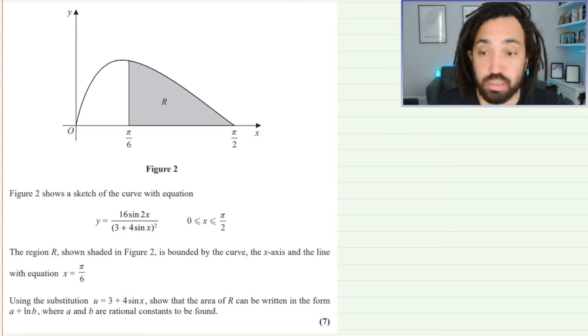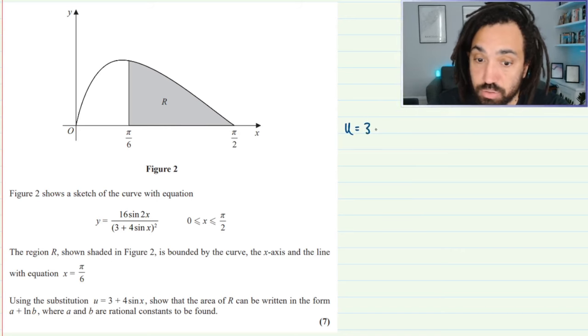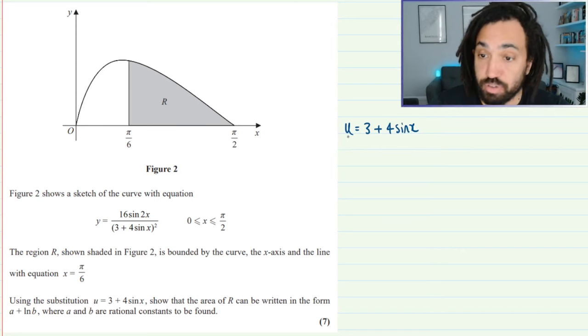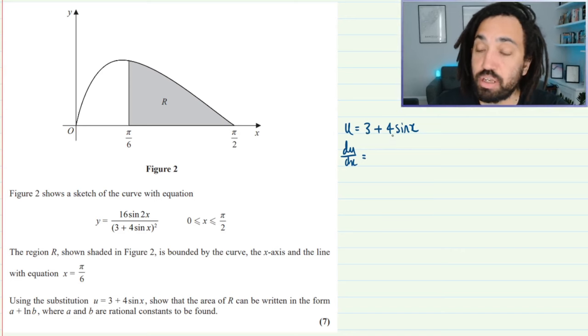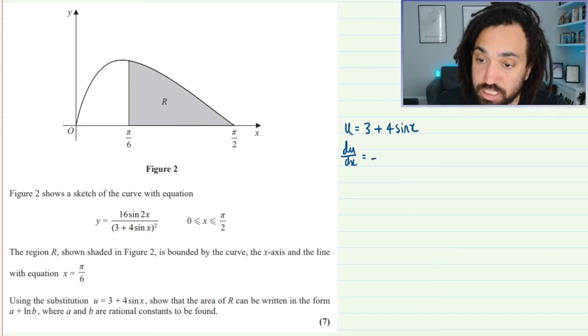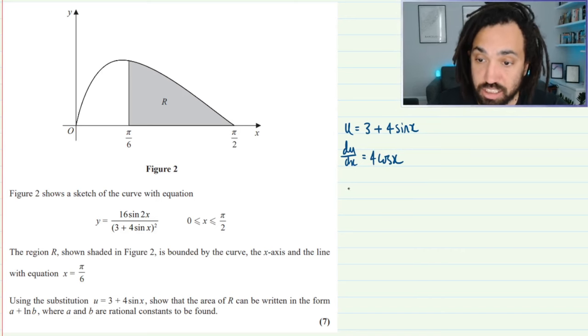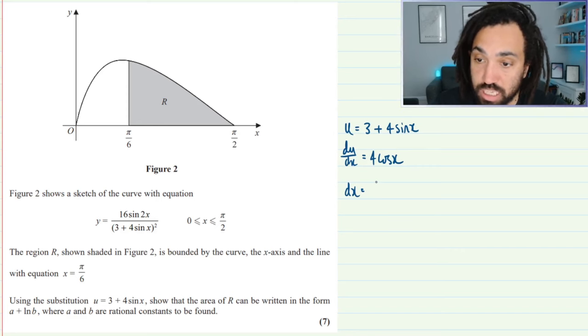So where are we? We are over here and we start by writing the substitution which is u is equal to 3 plus 4 sin x and then what I'm going to do is differentiate that. So that gives me du by dx is equal to 4 cos x. Let's make dx the subject, so multiplying up and then dividing through by 4 cos x gives me du over 4 cos x.